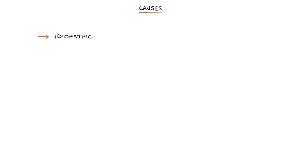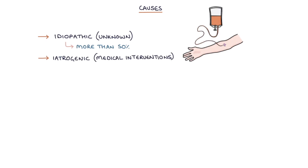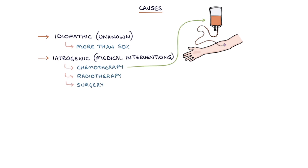So what are the causes of premature ovarian insufficiency? It can be idiopathic, meaning the cause is unknown, and this is the case in more than 50% of cases. It can be iatrogenic, meaning due to medical interventions such as chemotherapy, radiotherapy, or surgery — for example oophorectomy, where the ovaries are removed.